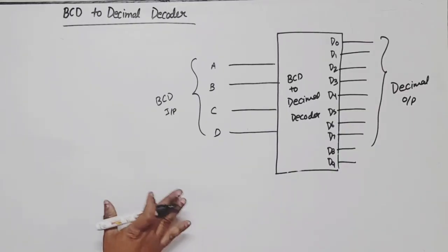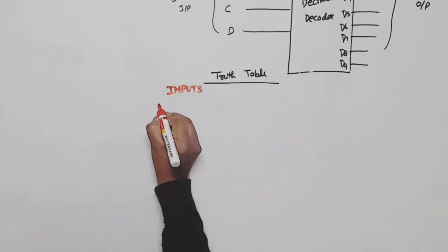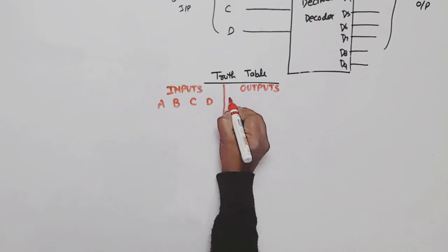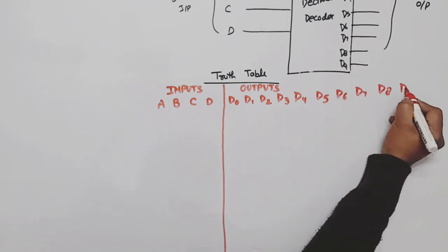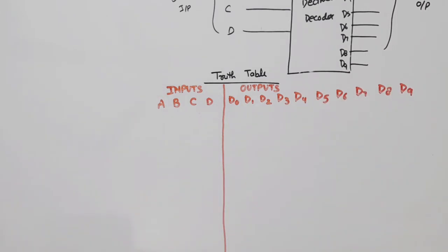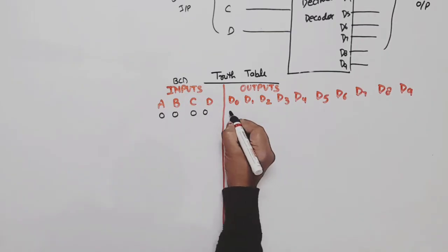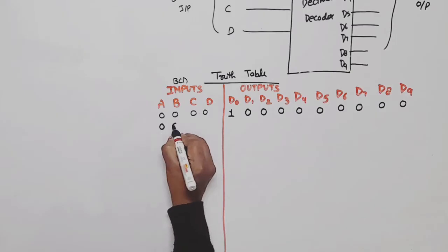For the truth table, we have 4 inputs and 10 outputs: D0, D1, D2, D3, D4, D5, D6, D7, D8, D9. In a decoder, for each input combination, the corresponding decimal output goes high while all remaining outputs are zero. The first combination is all zeros (0000), which is decimal 0, so D0 will be high and all remaining outputs will be zero.